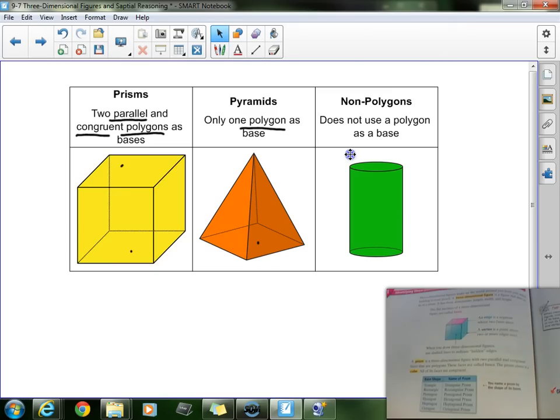The last group we're going to be talking about is the non-polygons, and non-polygons simply do not have a polygon as a base. So we see here and here, it has two parallel congruent shapes, but they're not polygons - they are circles. Remember, a circle is not a polygon. So cylinders are non-polygonal three-dimensional figures.